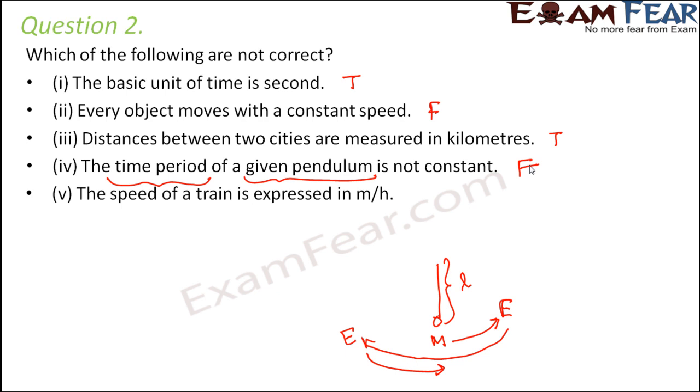The speed of a train is expressed in meters per hour. The speed is generally expressed either in kilometer per hour or in meter per second. So this statement is also false.